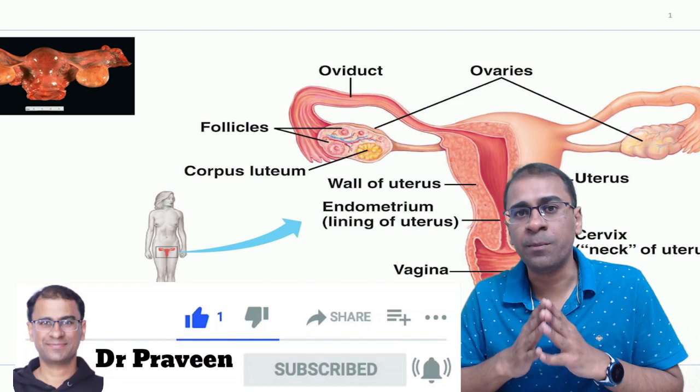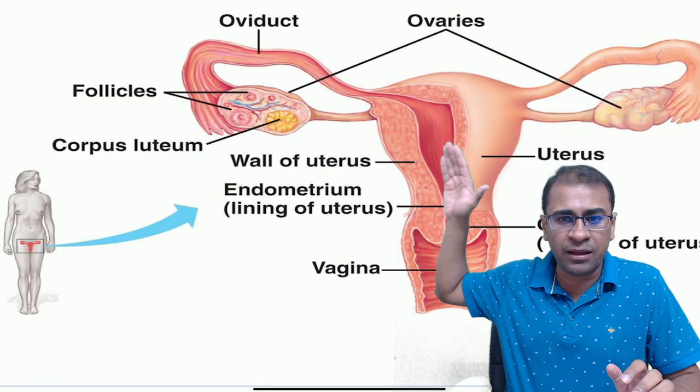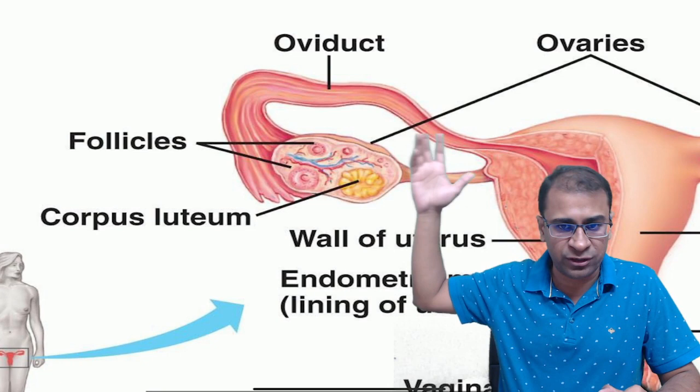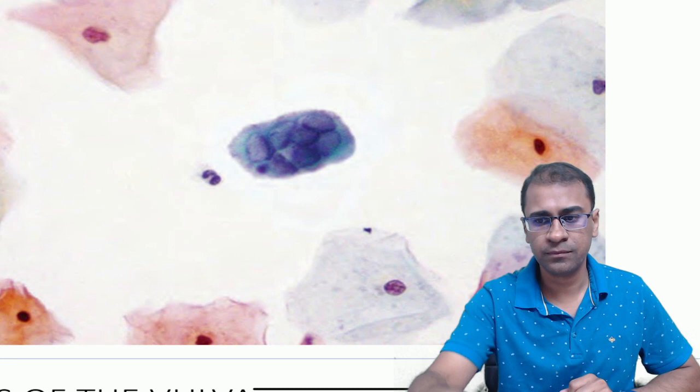Please subscribe to my channel so that you don't miss any other video. Look at this anatomy — it shows very clearly there is a vagina, a cervix. Remember this is the ectocervix, the endocervix. This is the uterus which has a myometrium and the endometrium. The parametrium is not very important in pathological language, and then there is the fallopian tube — the oviduct is also the name — and there is an ovary. We will talk here about the pathology involving mainly the vagina, cervix, uterus and the ovary.